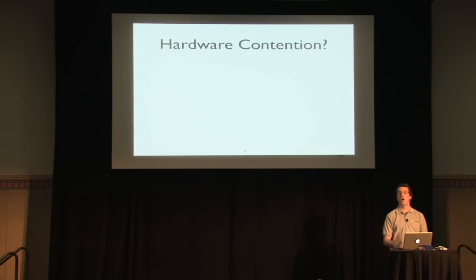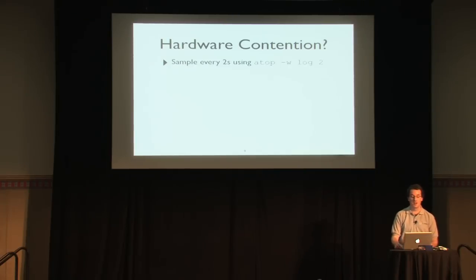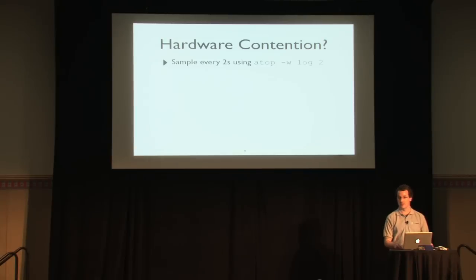The question is: are we seeing this apparent serialization of VM creation due to hardware contention? To answer this, we repeat the experiment but sample the hardware metrics using atop every two seconds: 'atop -w logfile'. We're going to look at the hardware utilization for the furthest point on the curve — N equals 20 VMs being booted in parallel.